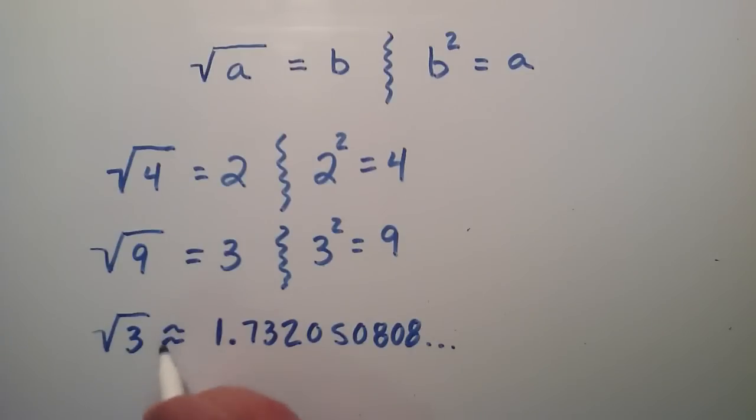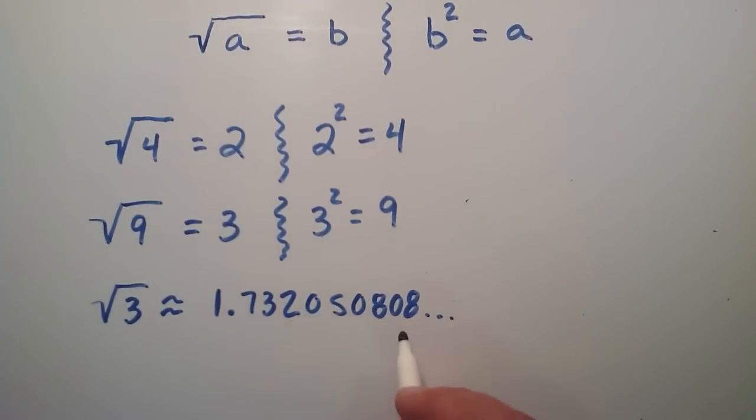This little squiggly equal sign basically means that it's almost equal to, but not quite. So it's kind of a little bit of an estimation. My calculator says that this is what the square root of 3 is.